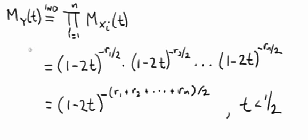So we have shown that the moment generating function of the random variable Y, which is the sum of independent chi-square random variables, is a chi-square random variable itself with r sub 1 plus r sub 2 out to r sub n degrees of freedom.